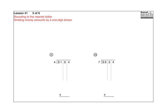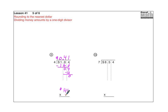Number nine: first, get that decimal point and dollar sign up there. Four going into one doesn't go, so combine the one with the six to make sixteen. Four goes into sixteen four times; four times four is sixteen; sixteen minus sixteen is zero. Bring down the four — four divided by four is one; one times four is four; no remainder. Check: forty-one cents times four — one times four is four; four times four is sixteen. Decimal point goes over two spots: a dollar sixty-four.